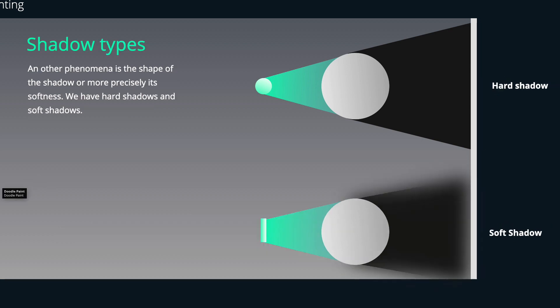The second thing about shadows is the appearance of the shadow itself. We have basically two types of shadows: hard shadows where the edge of the shadow is very hard and pronounced, and soft shadows where the edge of the shadow is more soft and we cannot make out the exact shape of the shadow.